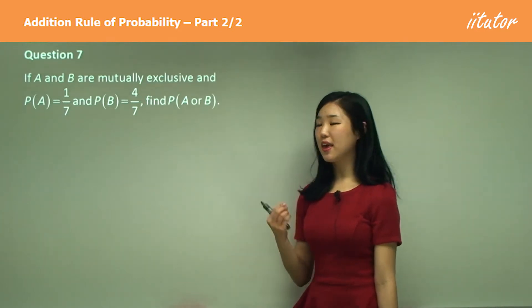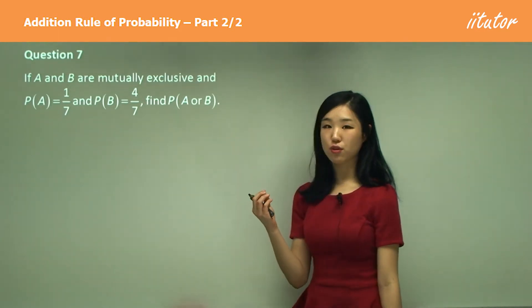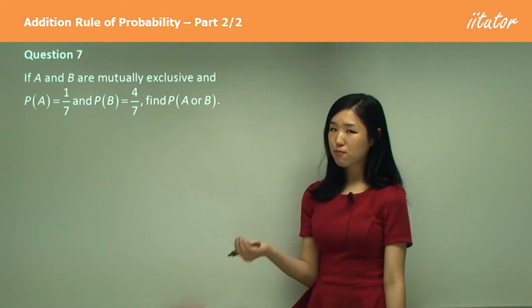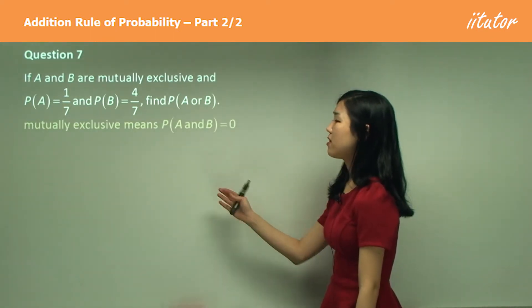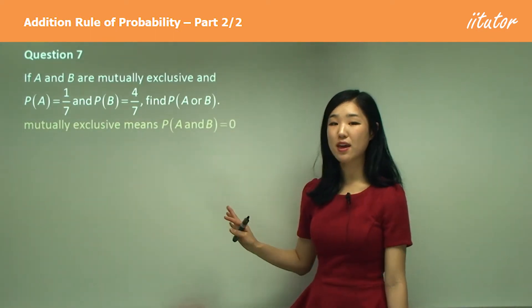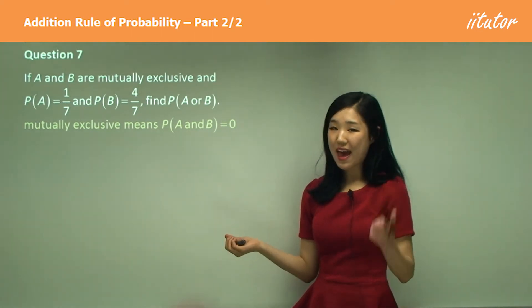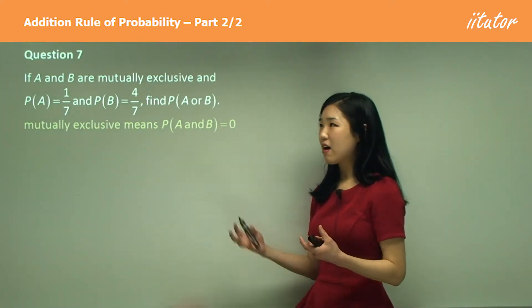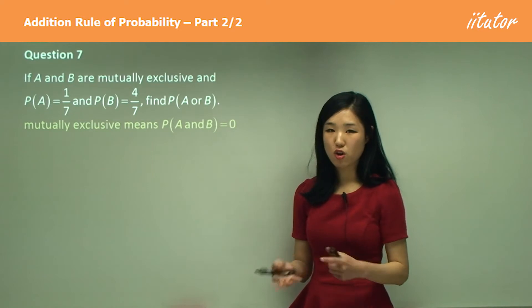Now, the key thing here is mutually exclusive. What does mutually exclusive mean? Mutually exclusive means the probability of A and B is zero, which means A and B cannot occur together.